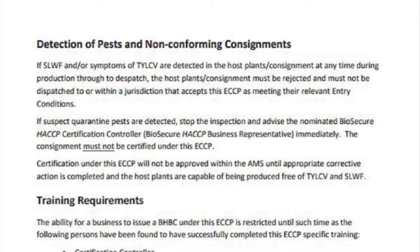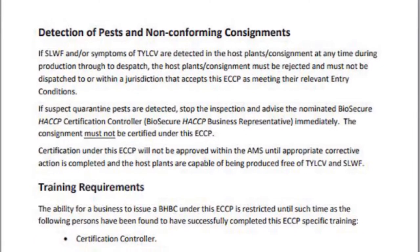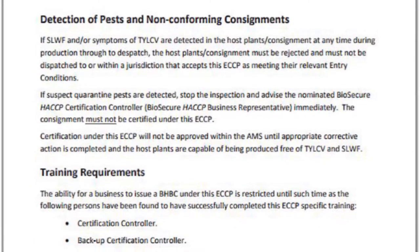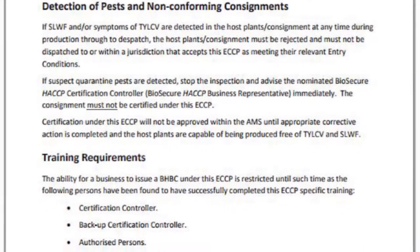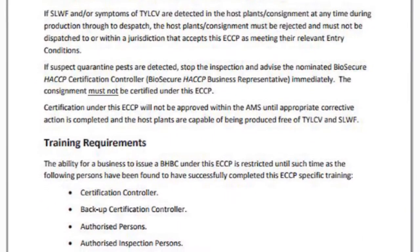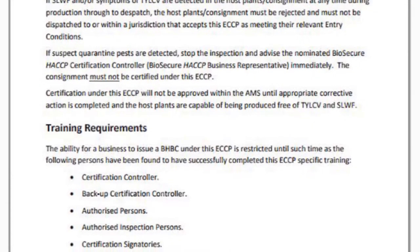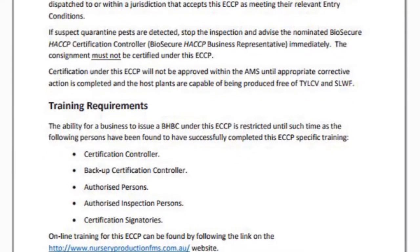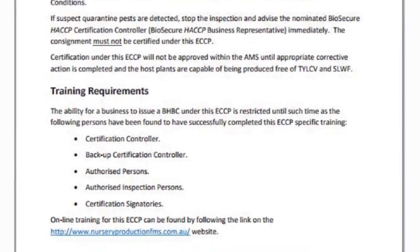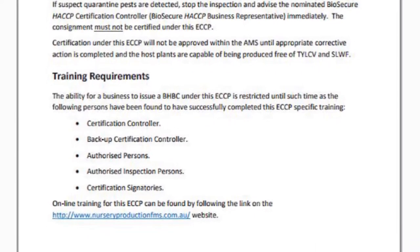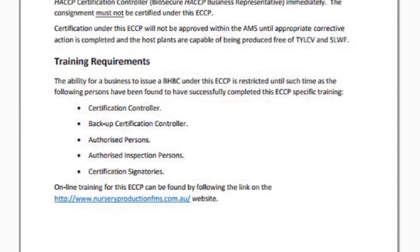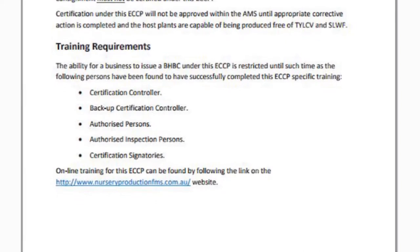If a pest is detected, the consignment must be rejected and cannot be certified under the ECCP. The nominated Biosecure HACCP Certification Controller must be advised immediately and the appropriate corrective action must be taken as outlined in the section titled Detecting Pests and Non-Conforming Consignments. In this section, you will also find a list of authorised persons who can generate a BHBC using the ECCP and the training requirements each person must complete.